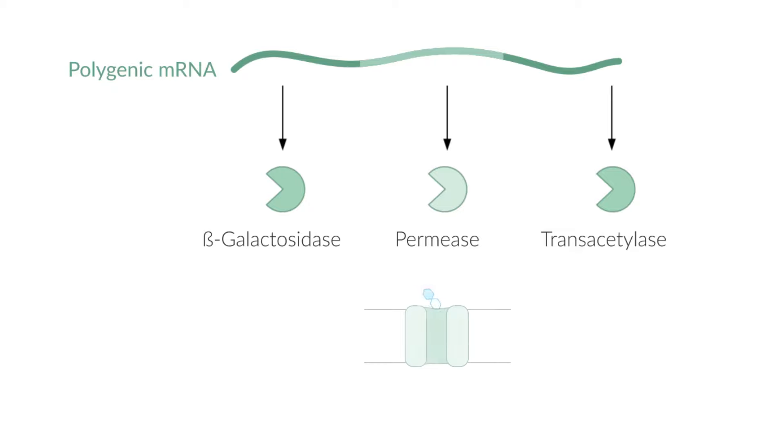Permease forms pores in the bacterial cell membrane, facilitating further lactose uptake into the cell. The enzyme beta-galactosidase breaks down lactose to simple sugar residues that can then be metabolized.